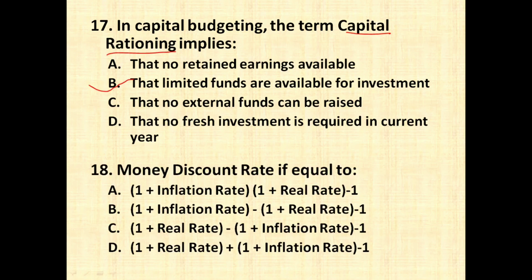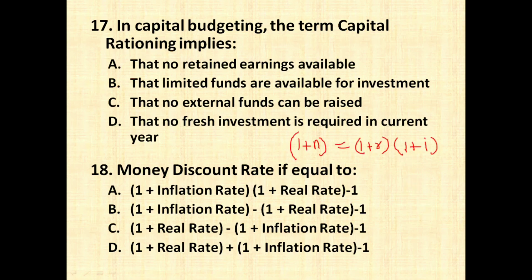The next question is: money discount rate is equal to what? The money discount rate is nothing but the nominal rate of return. We have studied in Fisher's effect that there are three types of rates: nominal rate, real rate, and inflation rate. The relationship given by Fisher is: (1 + n) = (1 + r) × (1 + i), where n is the nominal rate, r is the real rate, and i is the inflation rate. Therefore, n = (1 + r)(1 + i) − 1, which is the correct answer.